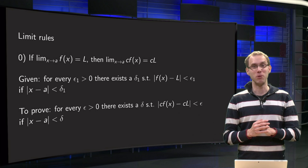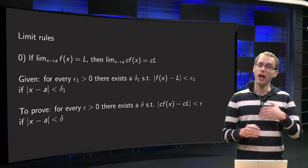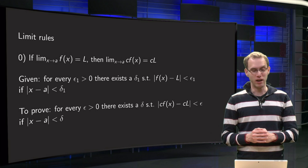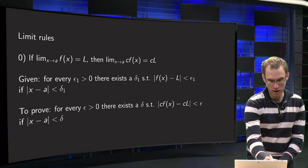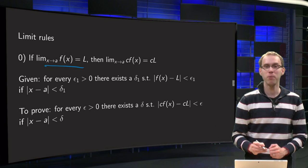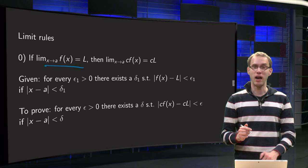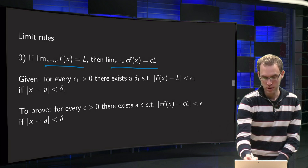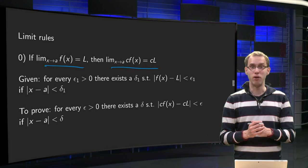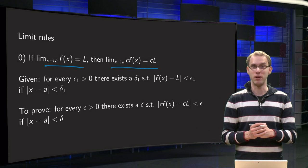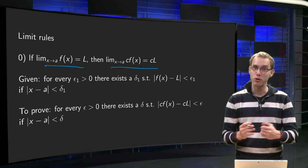So let's take a look at our limit rules. Rule 0: if the limit as x approaches a of f(x) equals L, then if you multiply f by a constant c, the limit as x approaches a of c times f equals c times L. It seems plausible, but how do we prove it?